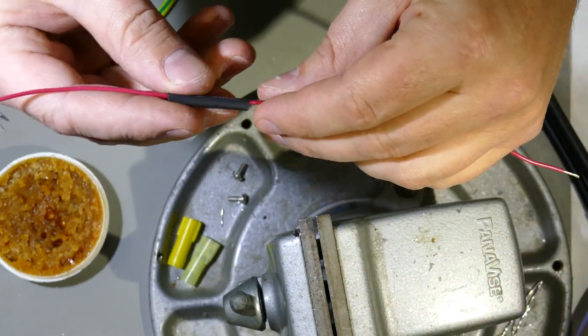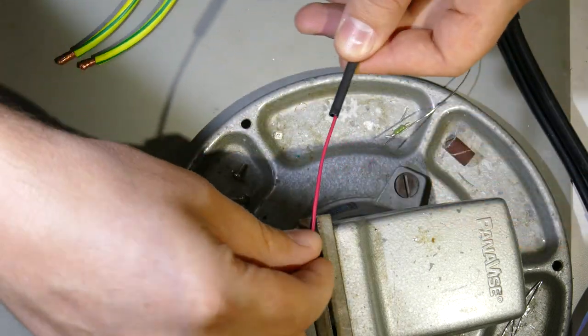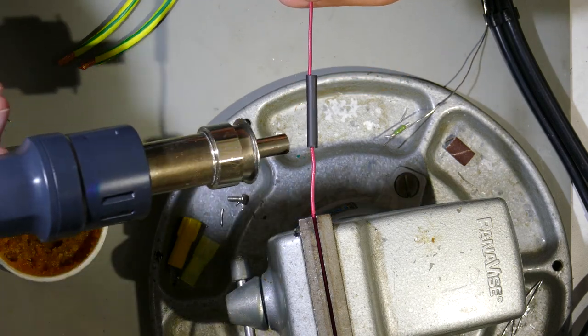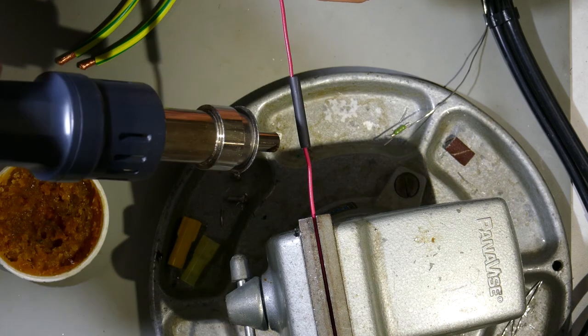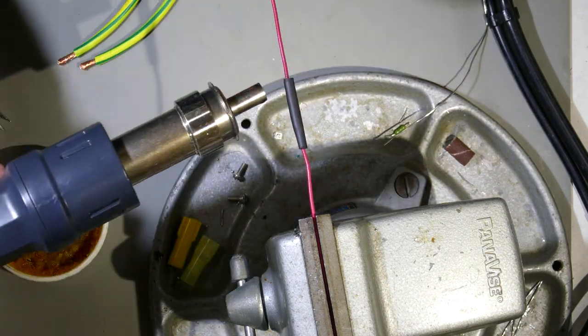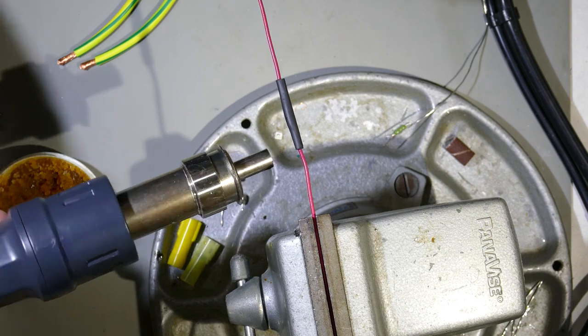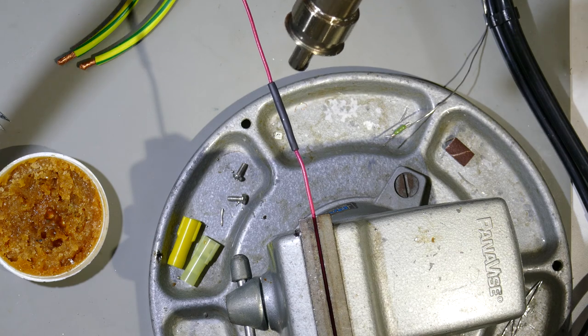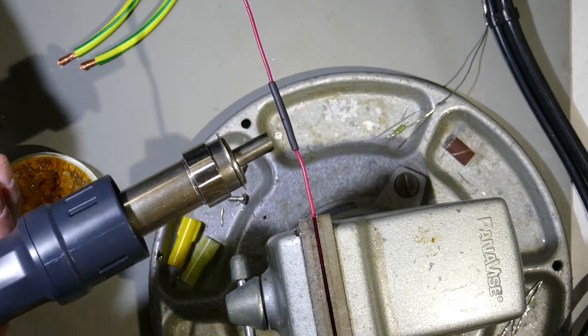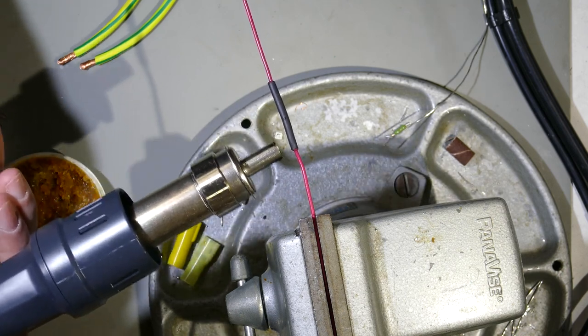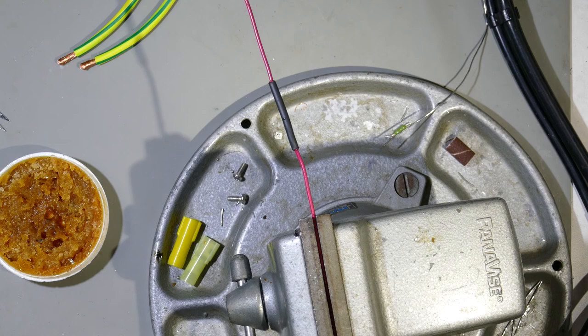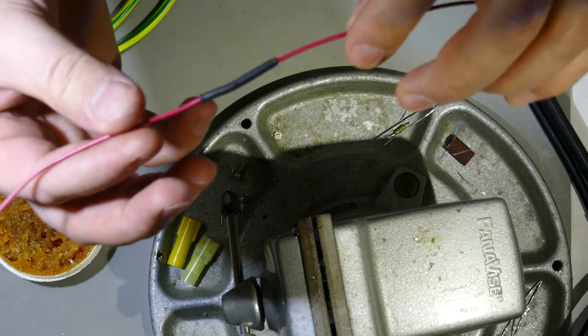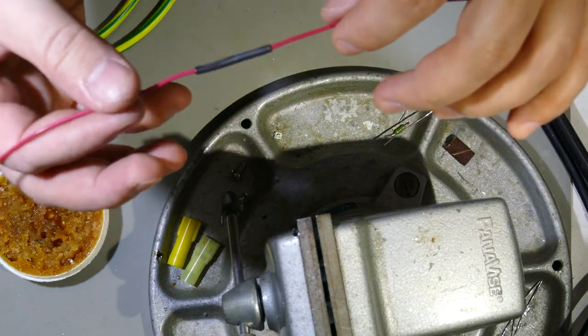So then you put the heat shrink over it. Use the hot air station to shrink it. Make sure you get it from all sides. There it goes. So I got a little bit of glue coming out over here. And I work the hot air station towards the other side. The glue is coming out over there. And done. And that is going to be water tight and actually pretty rigid when it's done. So that's a single wire, thin gauge.